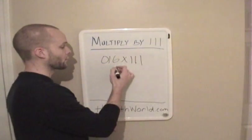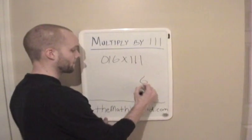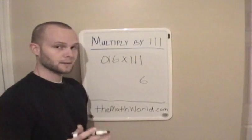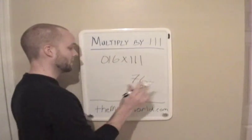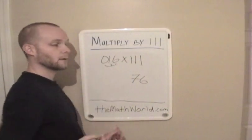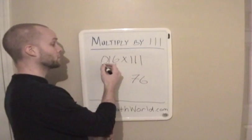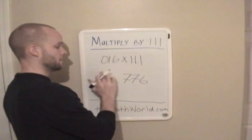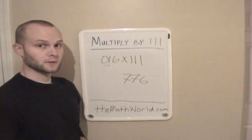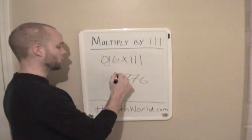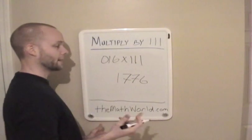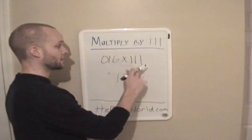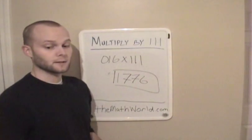The first thing we're going to do is write down the first number, which is 6. The next thing is we're going to add the first two numbers together — so 6 plus 1 is 7. Then we're going to add the next three numbers: 6 plus 1 plus 0 is 7. Then we add the last two numbers: 0 plus 1 is 1. And the last thing is to write down the last number, which is zero — we can just take that away — and 16 times 111 is 1776.